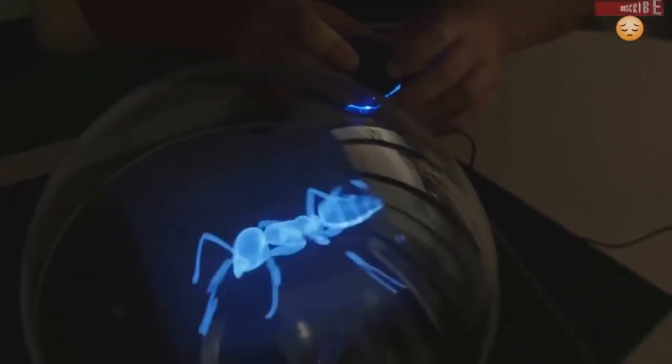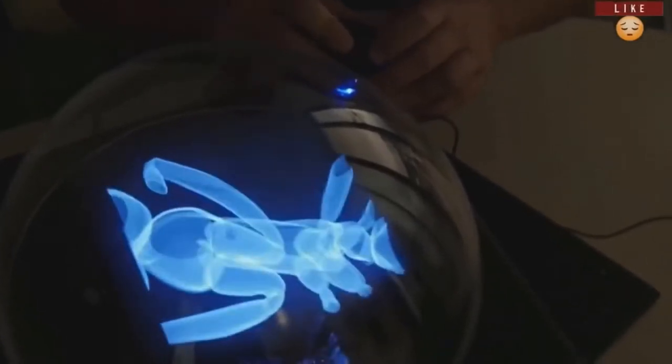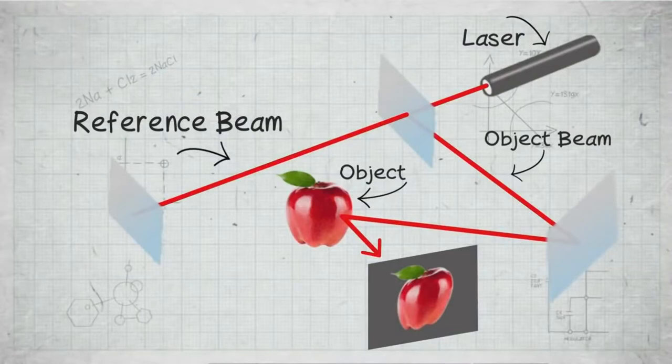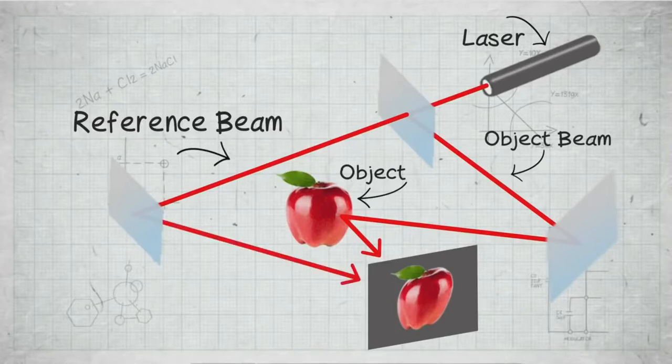Michael Talbot wrote: A hologram is produced when a single laser light is split into two separate beams. The first beam is bounced off the object to be photographed. Then the second beam is allowed to collide with the reflected light of the first. When this happens, they create an interference pattern which is then recorded on a piece of film.